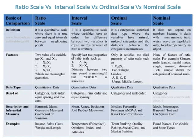The descriptive and inferential measures of ratio scale are harmonic mean, geometric mean, and coefficient of variation. For interval scale: mean, range, deviation, and product-moment correlation. For ordinal scale: median, percentile, Friedman ANOVA, and rank order correlation. For nominal scale: mode, percentages, binomial test, and chi-square test.